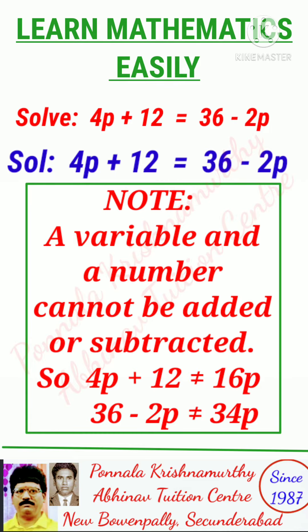Note: a variable and a number cannot be added or subtracted. So, 4p plus 12 is not equal to 16p, and 36 minus 2p is not equal to 34p.